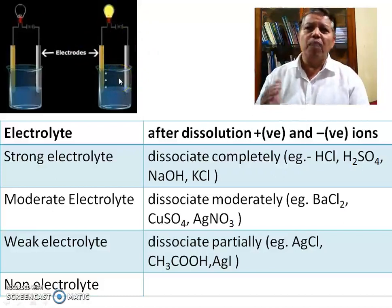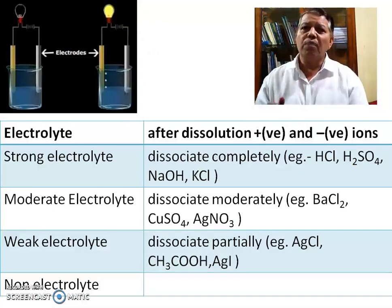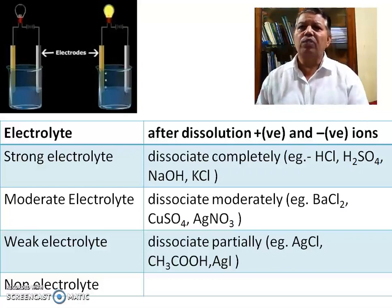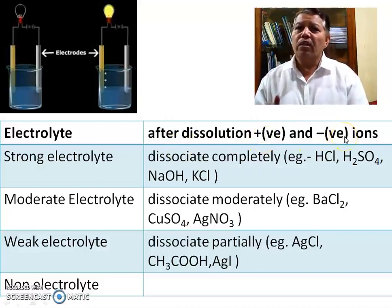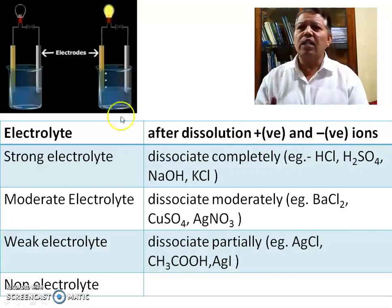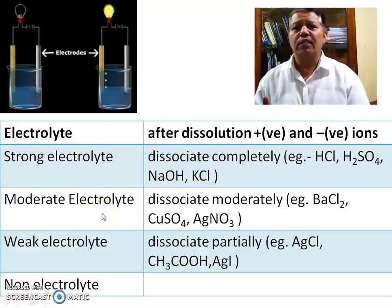This is because in the salt solution, the salt is completely ionized and it conducts electricity, therefore it becomes a closed circuit and the bulb glows. In this way, some compounds are called electrolytes. When an electrolyte is dissolved in water, it completely ionizes and gives the formation of positive and negative ions. Electrolytes are classified as strong electrolyte, moderate electrolyte, and weak electrolyte.